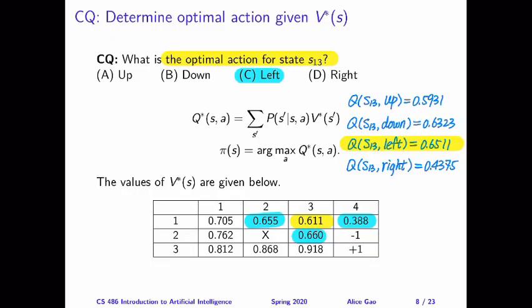So back to the clicker question, the answer is that the optimal action for state 1,3 is going left. By using this approach, if you want some extra practice questions, you can look at the other states and try to figure out the optimal policy and then compare this with what I've given you in the previous videos.